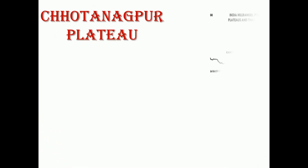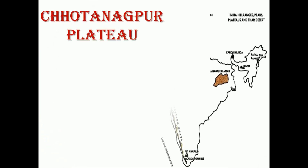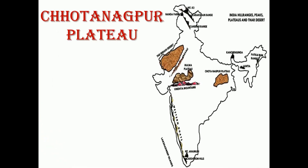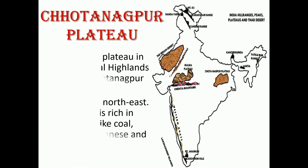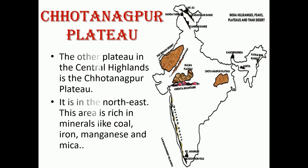Let's learn about the Chota Nagpur Plateau, as you can see in the map. The other plateau in the Central Highlands is the Chota Nagpur Plateau. It is in the northeast. This area is rich in minerals like coal, iron, manganese, and mica. That's it for today. Have a nice day.